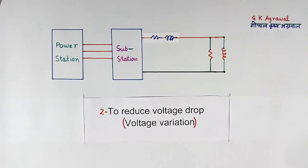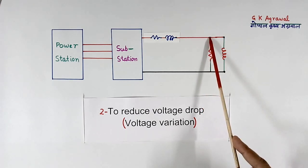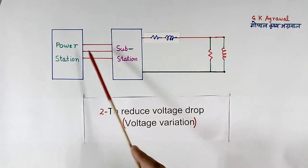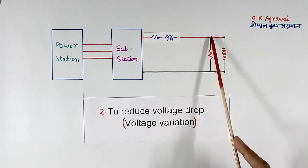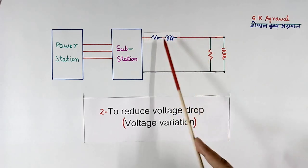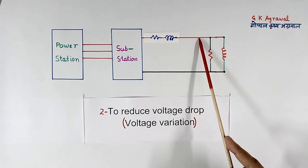Second reason to improve power factor is to reduce voltage drop or to reduce voltage variation here. What happens? This is load current. This current will flow in this R and L also. What is this R and L? This R and L is the resistor and inductor of this whole line. I have shown only one place. So when this load current flows in this R and L, there will be drop here. So there will be voltage drop here.